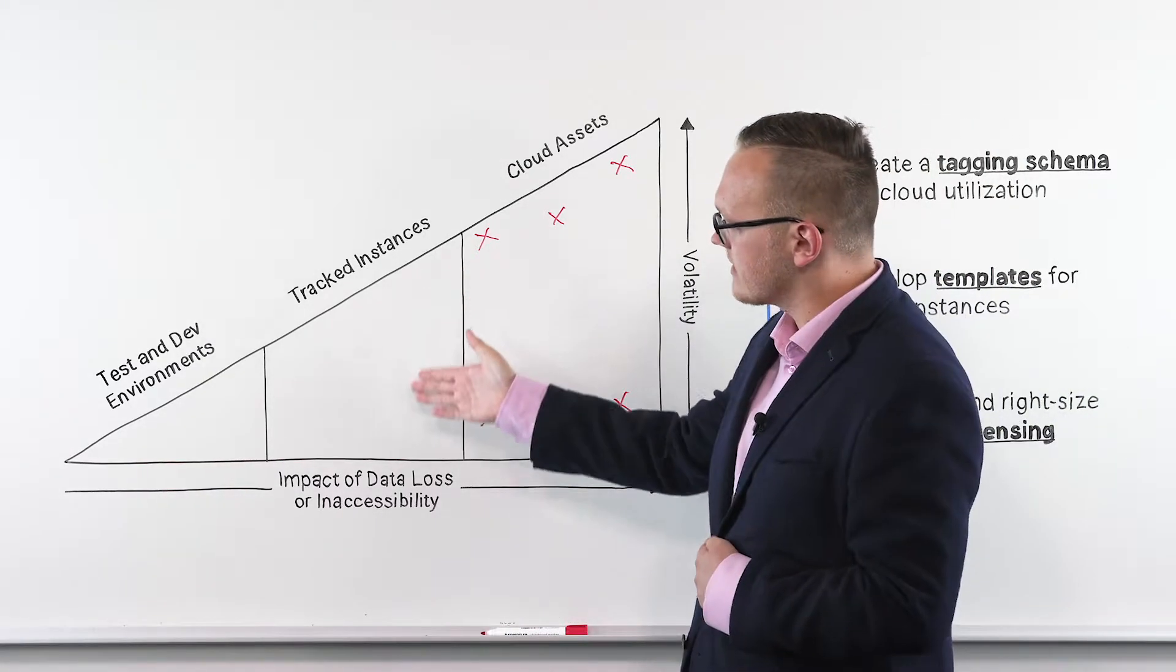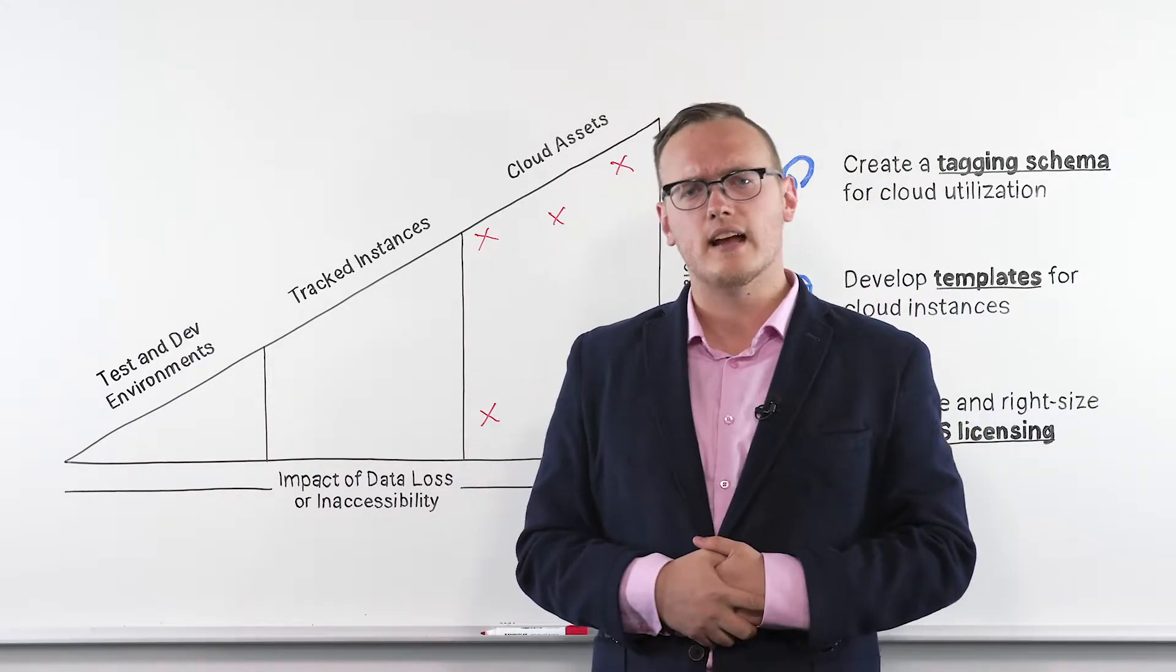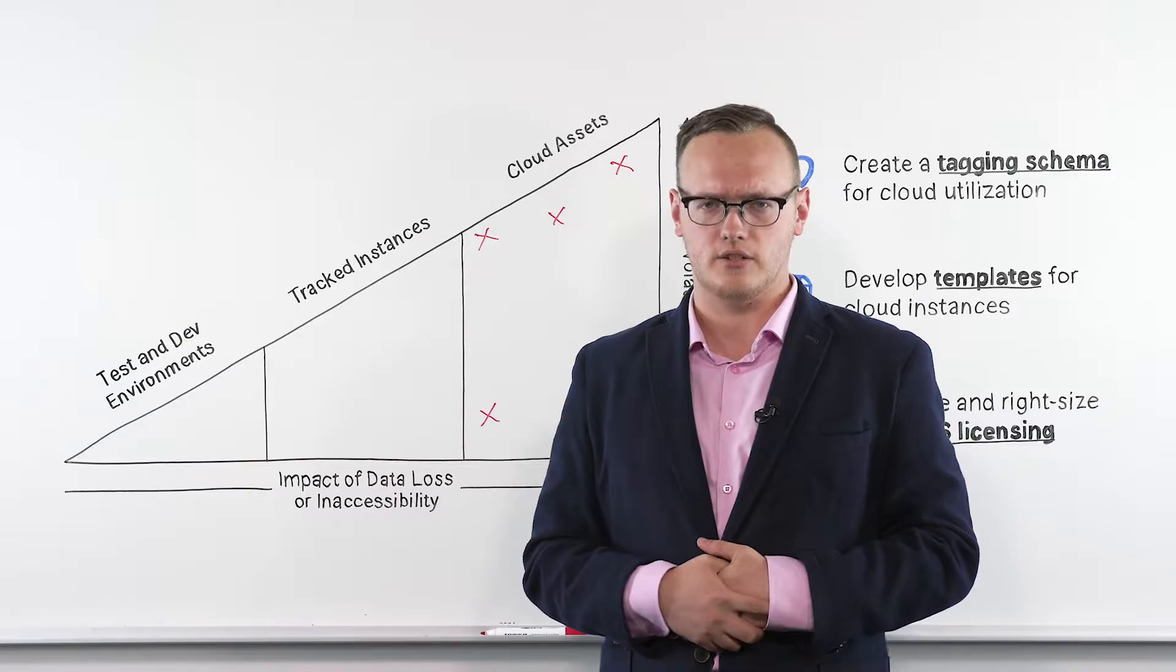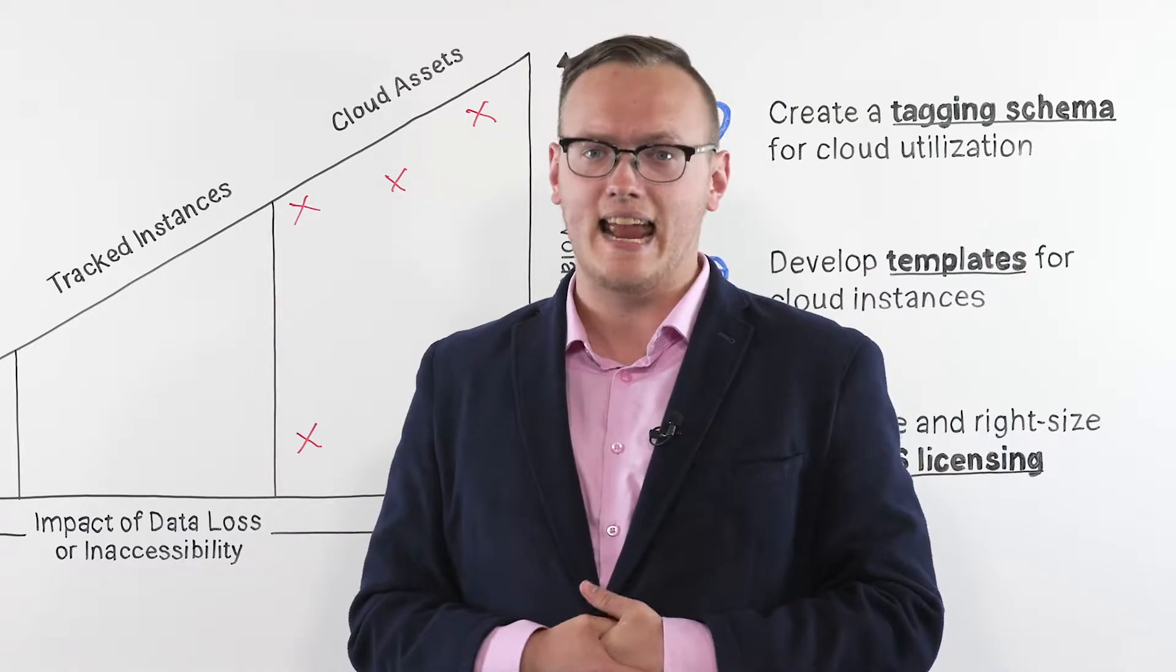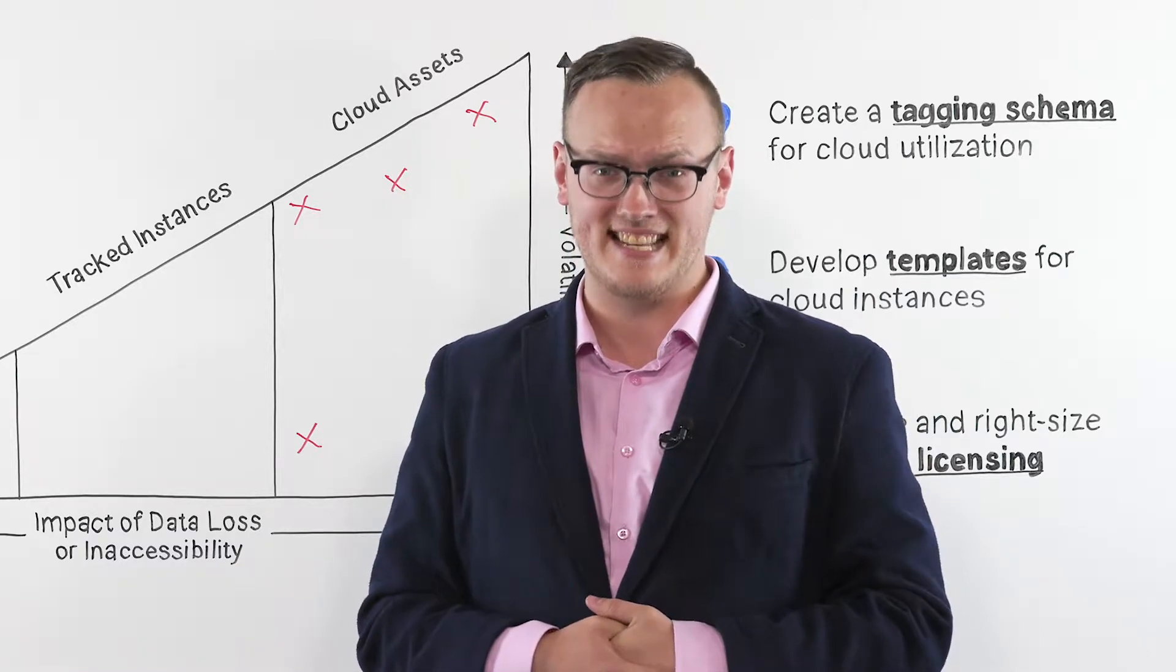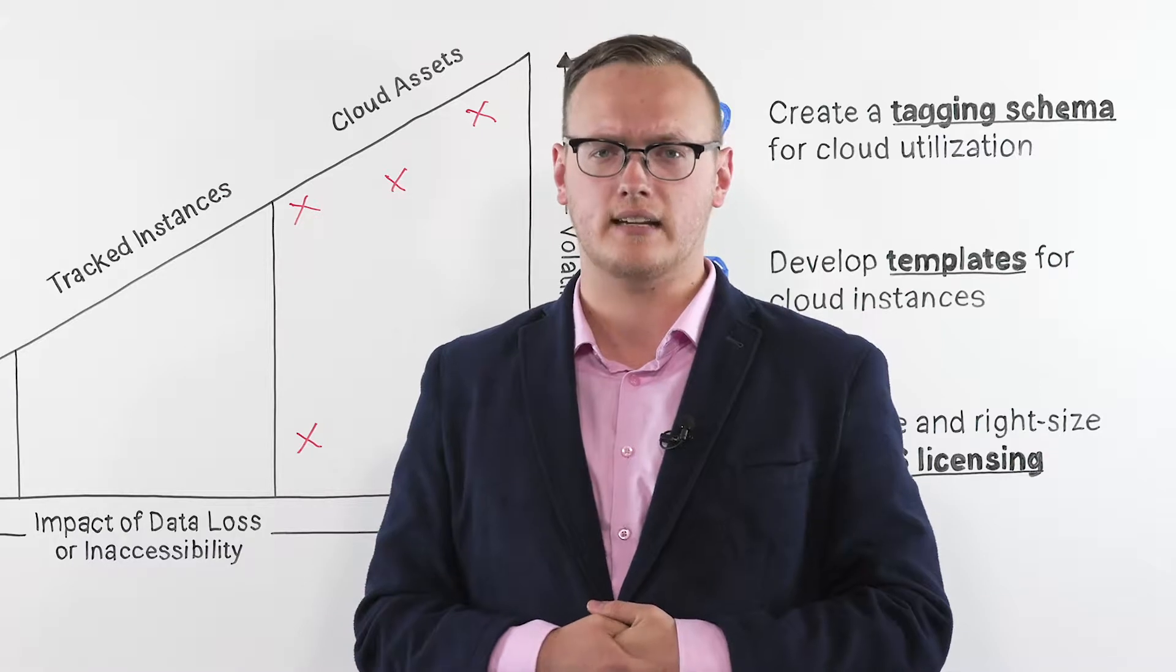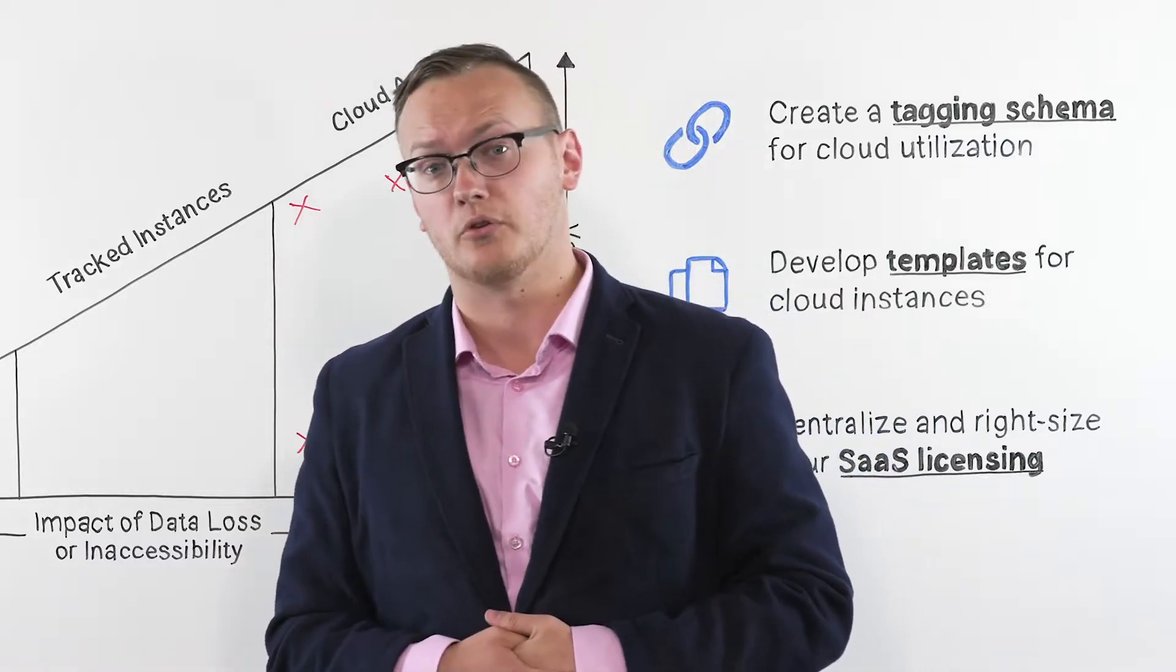Next we have our tracked instances. These are going to be sub-organizational level cloud instances that are a lower threat to the organization. For instance, any production environment for a sub-organization level project that does not contain sensitive information and would not present a large productivity impact if it were to be inaccessible or to stop working.